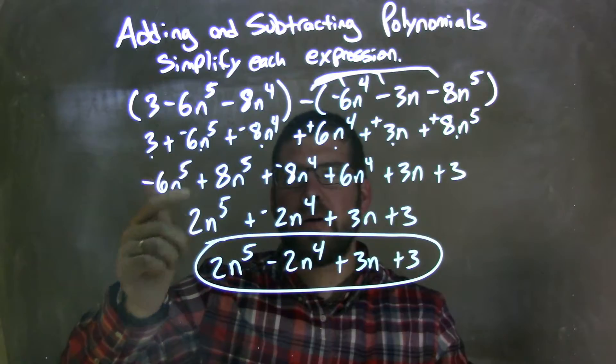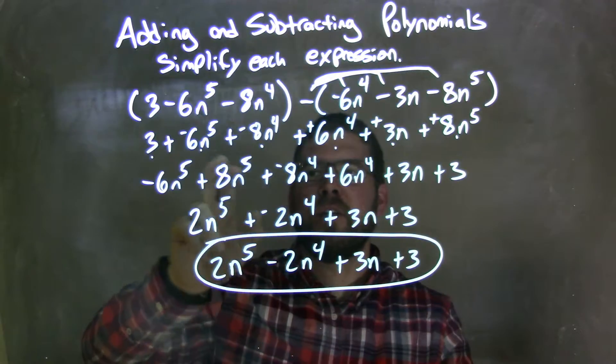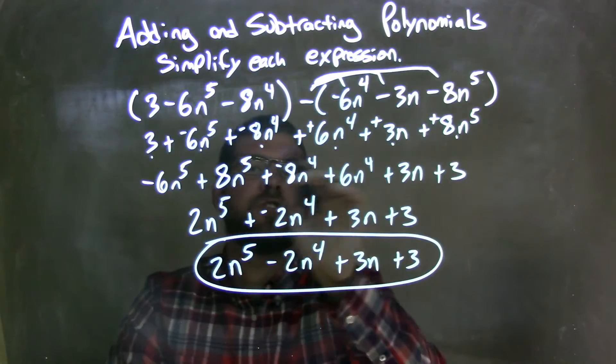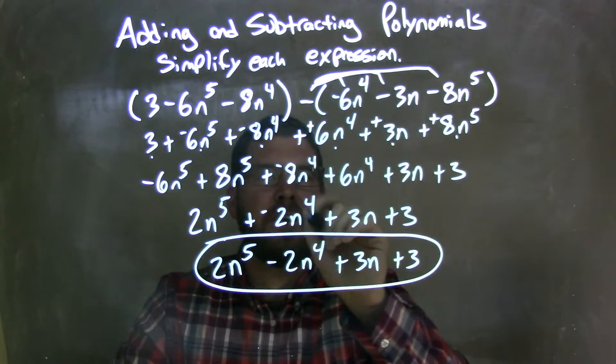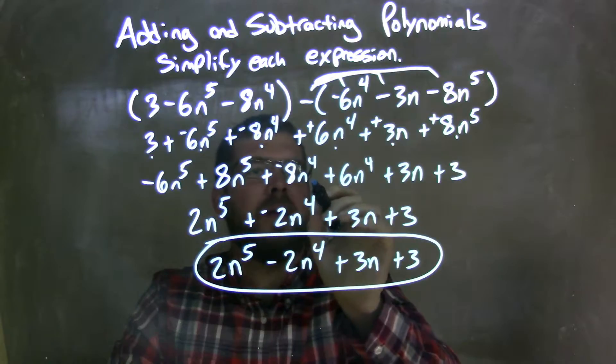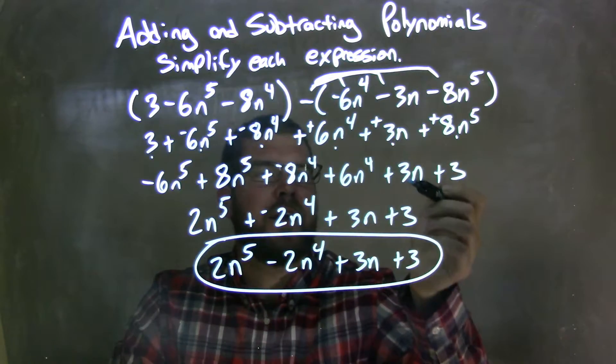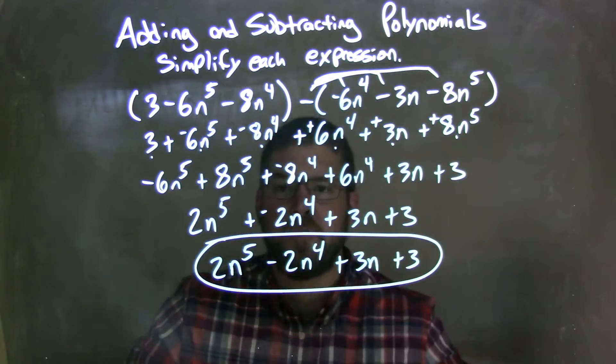Then I decided to rearrange highest degrees first. That was the 5th power. So we have negative 6n to the 5th and 8n to the 5th. And I put little dots underneath each term as I went down to make sure I didn't forget anything. Every term here will have a dot on it. The negative 8n to the 4th right there, 6n to the 4th, 3n down here, and the 3 down here. All rearrange using the commutative property.